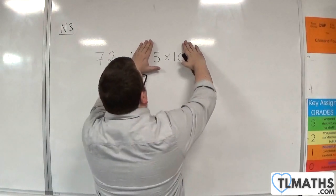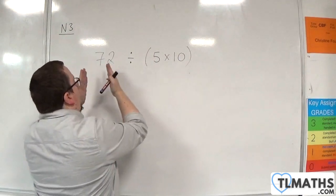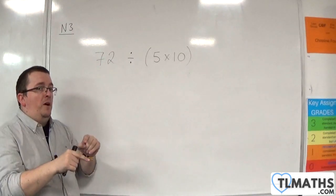then I would work from left to right, and I would do 72 divided by 5 first, and then multiply my answer by 10. But that's not what this is saying.